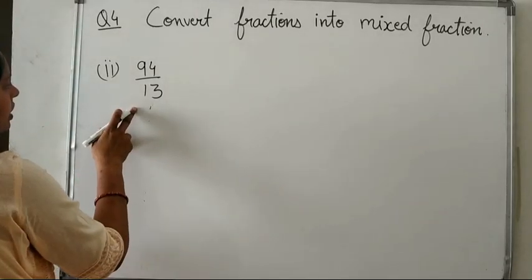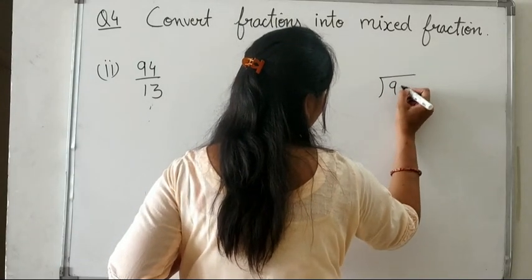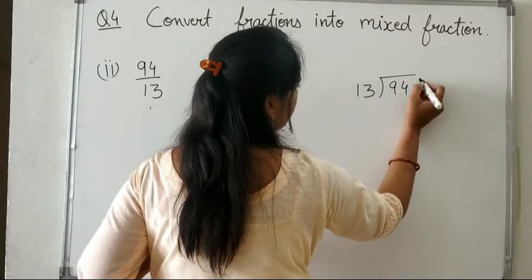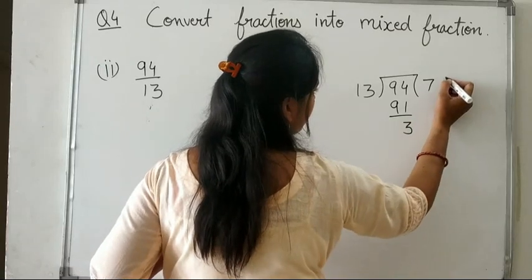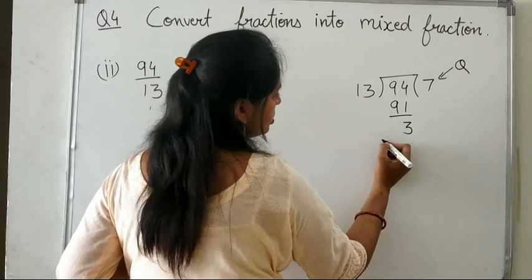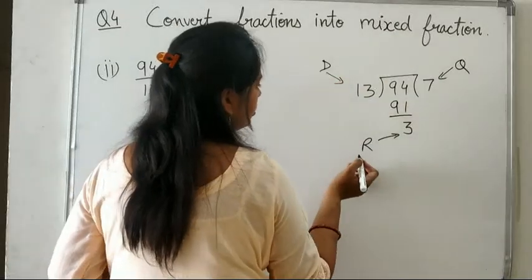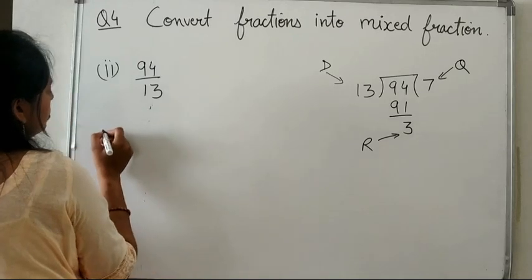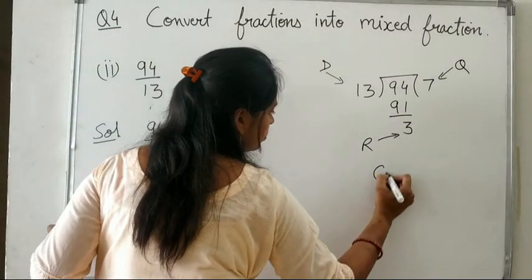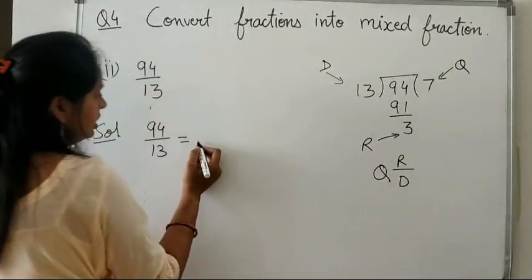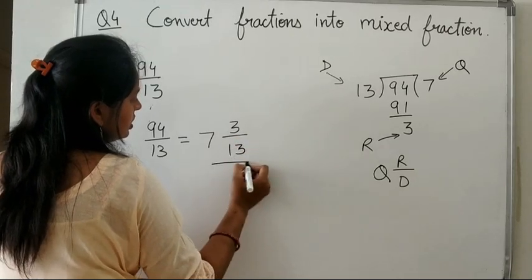Next, convert 94 upon 13 into a mixed fraction. Divide 94 by 13: 13 × 7 = 91, remainder 3. So the quotient Q is 7, remainder R is 3, and divisor D is 13. Writing in the form Q, R upon D, the answer is 7 and 3 upon 13.